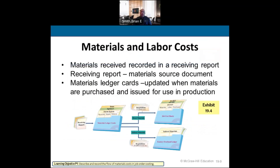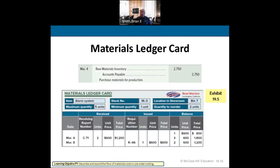Here's the flow of materials and labor. As we pull materials, we annotate it in the ledger and create job entries. Any indirect materials go into the factory overhead ledger. The materials ledger shows the report number, how many units were pulled, the cost, and total price. The requisition number ties back to the job order.